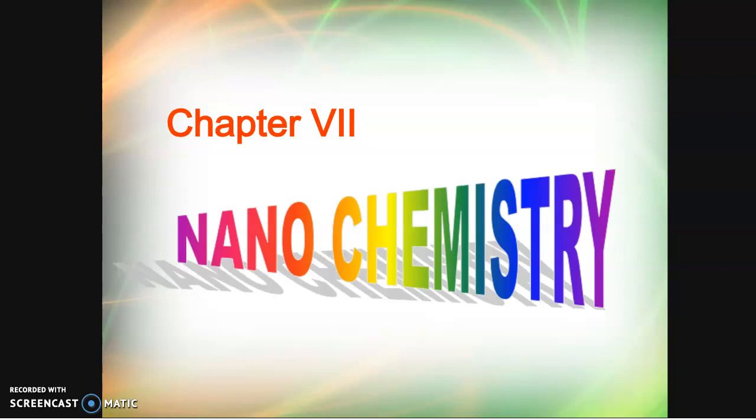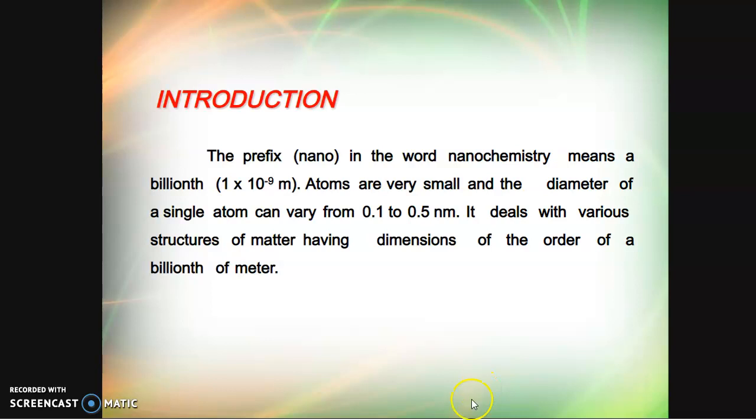Hi students, today we are going to discuss the basics of nanochemistry. First, let me introduce what is meant by nano. The prefix nano in the word nanochemistry means a billionth, that is 1 × 10^-9 meters. Atoms are very small and the diameter of a single atom can vary from 0.1 to 0.5 nanometers. It deals with various structures of matter having dimensions of the order of a billionth of a meter.